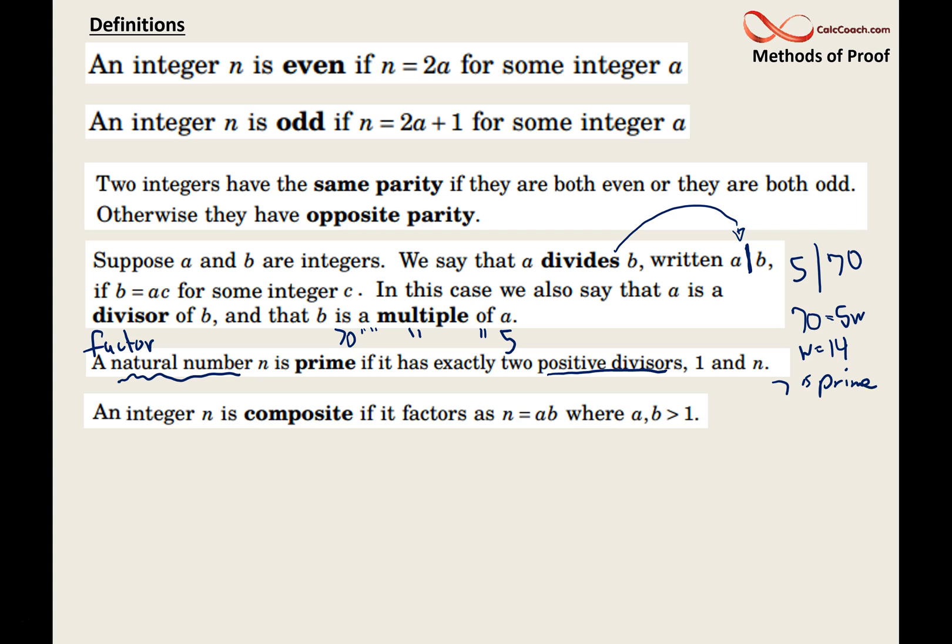An integer n is composite if it factors as n = ab where a, b > 1. So, example 14 factors as 7 times 2, two integers that are bigger than 1. So, basically, it just means that it has other positive divisors than 1 and itself.